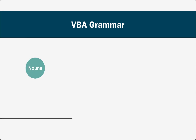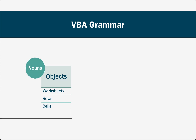For instance, nouns — we have those in VBA. We call them objects. Objects are things like worksheets, rows, cells — the things in Excel. As you get started, most of your programming sentences will start with objects.